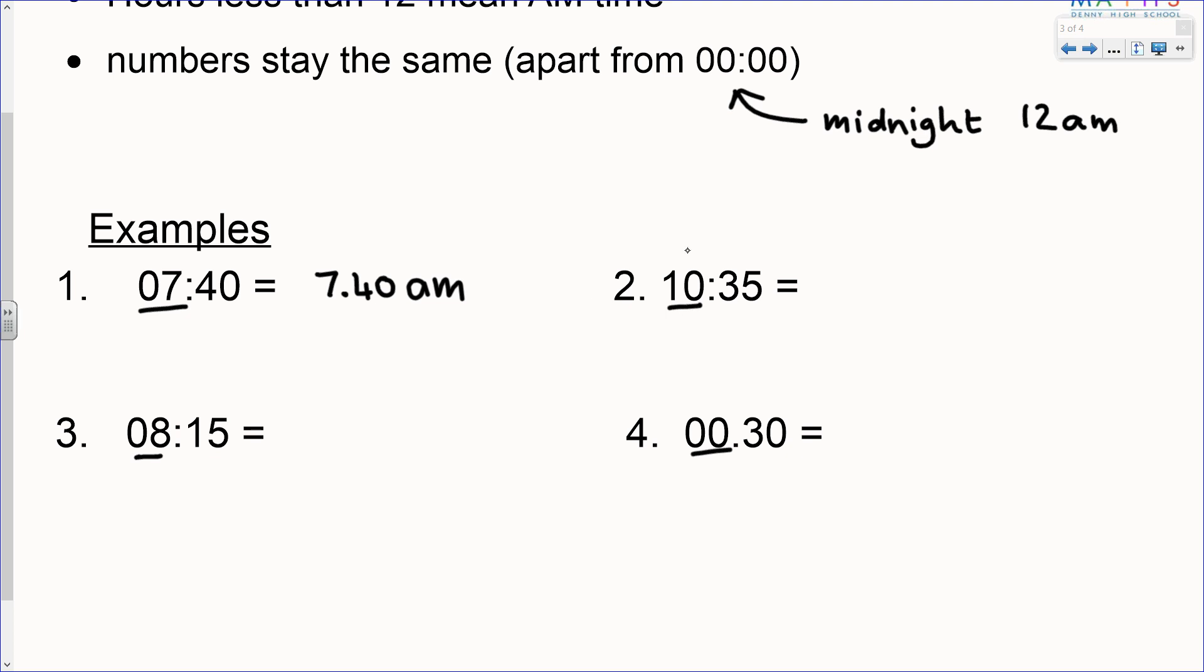Number two. 10 is less than 12, so that means this is an am time. And the numbers stay the same: 10:35 am. Number three. The hours are less than 12 because it's 8, so this is an am time. And the numbers stay the same: 8:15 am.